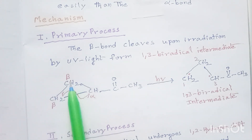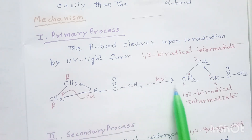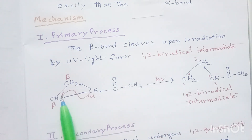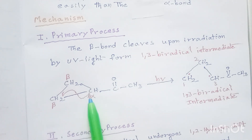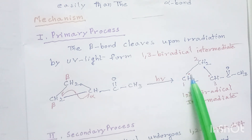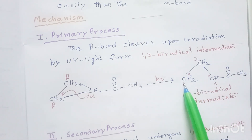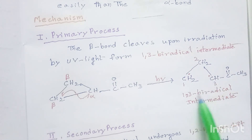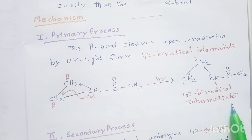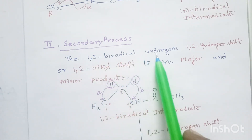This is the carbonyl group, adjacent to it is the alpha carbon, and this is the beta carbon. The bond between alpha carbon and beta carbon will cleave, forming two radicals — one radical on this CH2 and another radical on this CH2 carbon. As a result, we get a radical on the first carbon and a radical on the third carbon. This is the 1,3 biradical intermediate — this is the primary process.